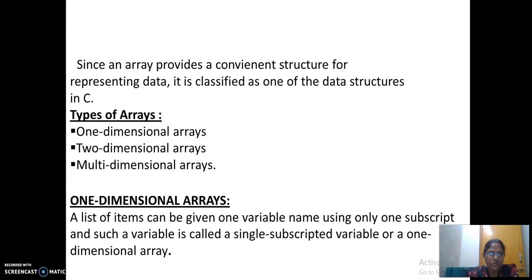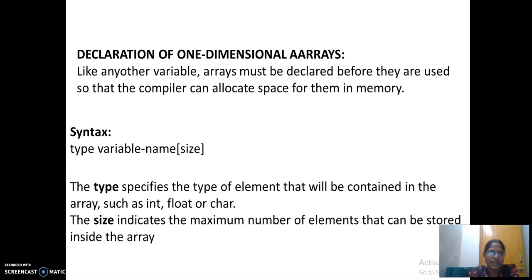If it is two subscripts, two-dimensional, and n subscripts, n-dimensional array. How you are going to declare a one-dimensional array? Like another variable, array must also be declared before compilation. And you should allow the space for them in the memory. The syntax of this one-dimensional is type, which is nothing but your data type, variable name, and the size. Size represents the number of values it can store.